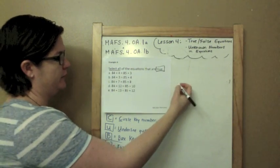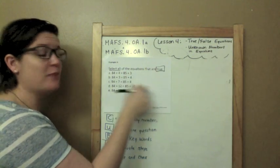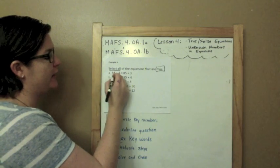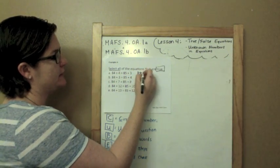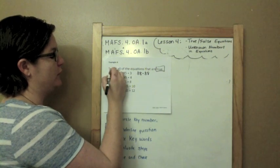84 plus 84, I'm going to do my work to this side over here. 84 plus 84 is 88. 85 plus 3 is 88. That equation is true.